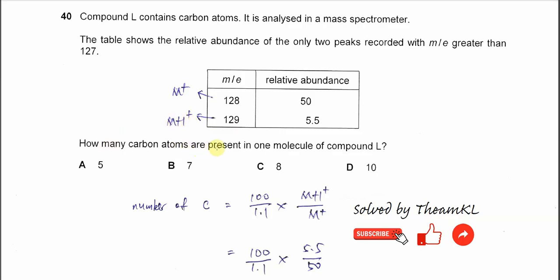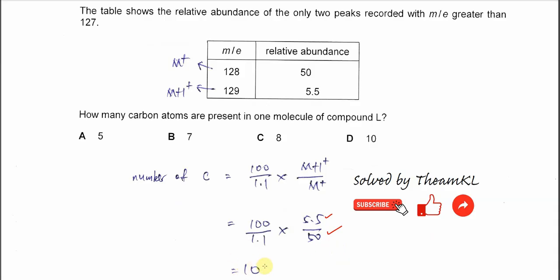To find how many carbon atoms are present in one molecule of Compound L, we use the equation: number of carbons = (100 / 1.1) × (M+1 abundance / M+ abundance). The M+1 abundance is 5.5 and the M+ abundance is 50. Substituting these values gives a carbon number of 10, so the answer is D.